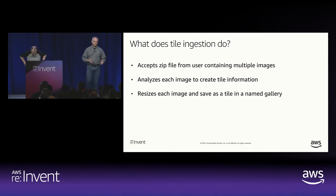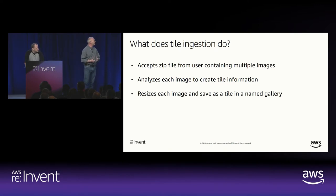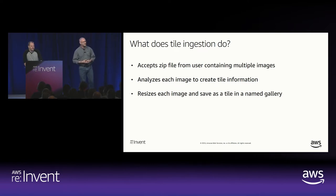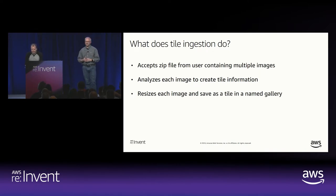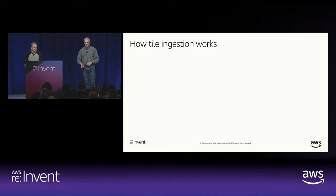Before we can start generating mosaics, we need a tile gallery — those tiles we build the final image from. We're calling that the tile gallery ingestion service. It takes a zip file from a user containing multiple images. We considered using the internet as a source of images, but decided that's not a great idea in a public demo, so we fell back to a zip file of Norm's family images. The ingestion process analyzes each image in the zip file, creates tile information, shrinks it down to be used as a tile, and stores information about it into a named gallery.